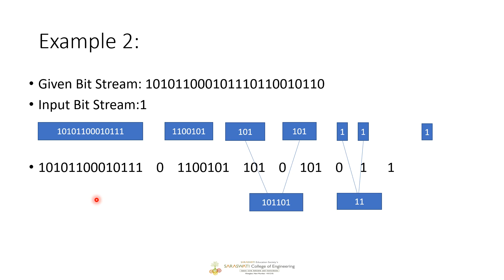To summarize the DGIM algorithm: we divide an input stream into buckets of size 2 to the power n — that means sizes 1, 2, 4, 8, and so on. For each size, we can have either one or two buckets, but never three buckets of the same size. If that scenario occurs, we merge the buckets. I hope we are clear with how to solve problems using the DGIM algorithm.